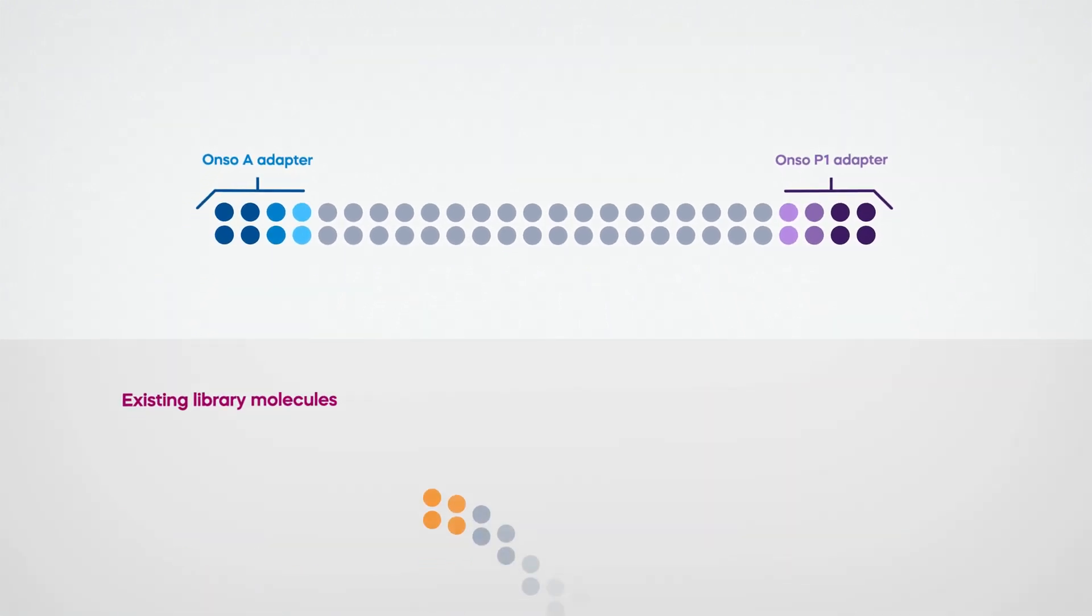Have existing library molecules? No problem. With our ONSO Library Conversion Kit, you can convert your existing P5, P7 library to an ONSO-compatible library.